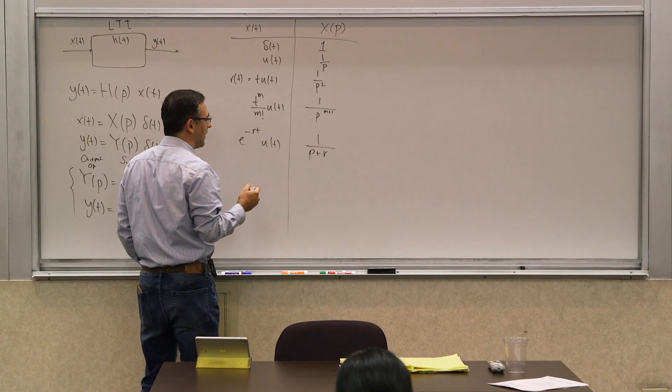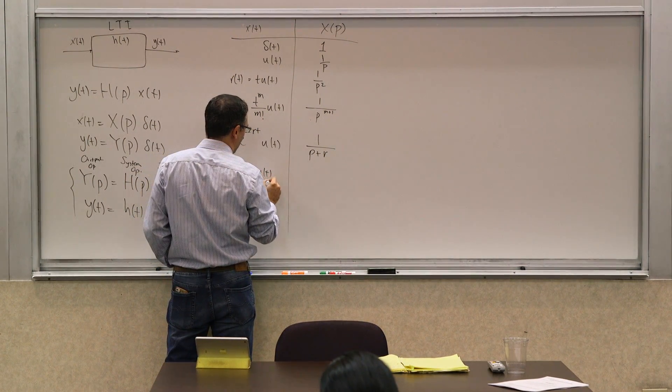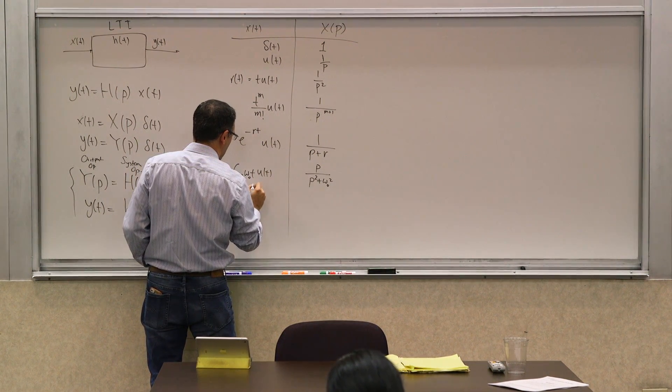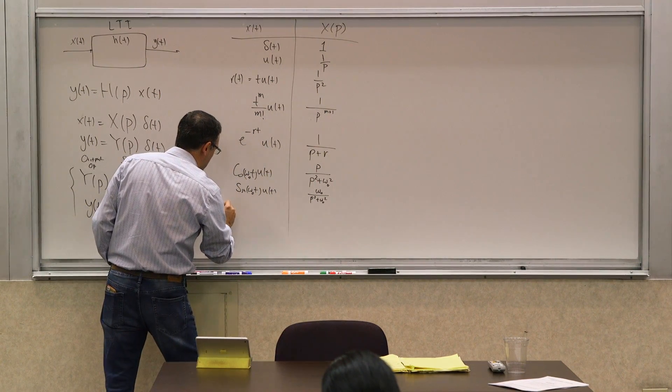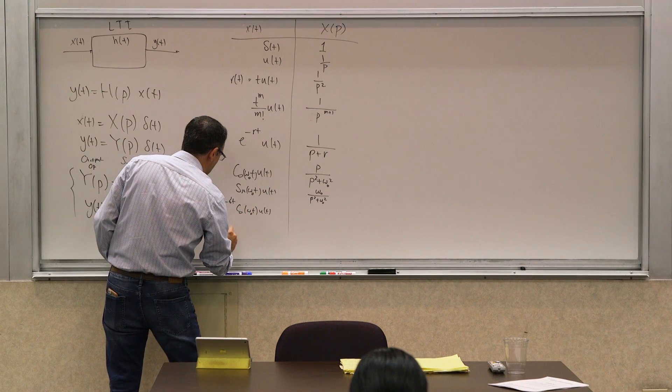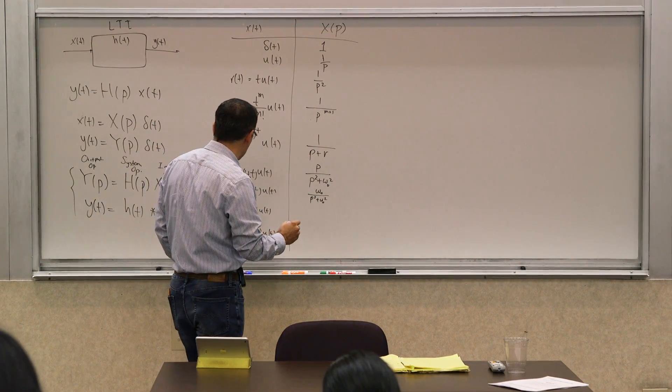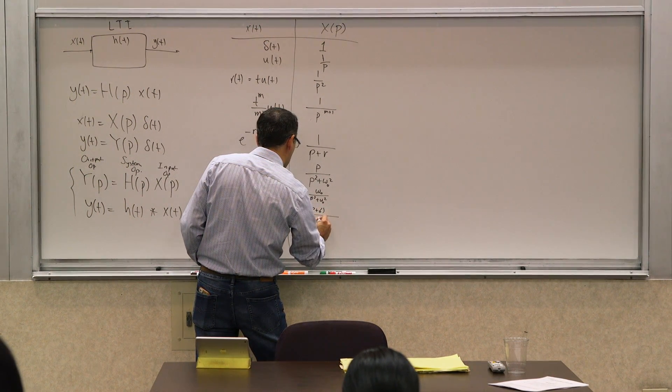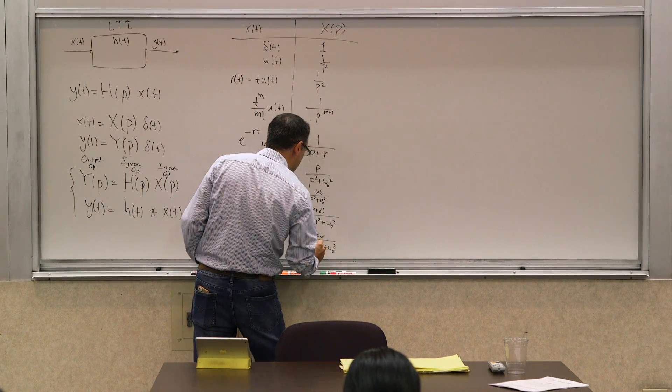We did other ones. We said an exponential e to the negative rt u of t was 1 over p plus r. Then we had cosine of omega 0 t u of t and sine. Cosine gave us p over p squared plus omega 0 squared and sine u of t gave us omega 0 over p squared plus omega 0 squared. Then we had even the more complex ones: e to the negative sigma t cosine of omega 0 t u of t and e to the negative sigma t sine of omega 0 t u of t. This became p plus sigma over p plus sigma squared plus omega 0 squared, and this became omega 0 over p plus sigma squared plus omega 0 squared. So we did all of this last time.